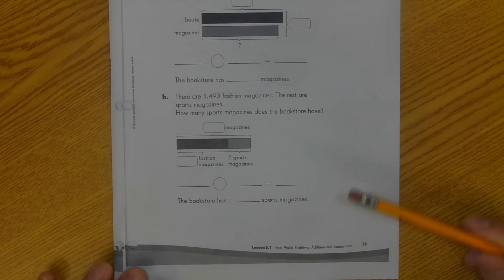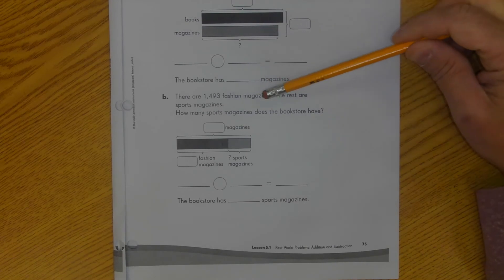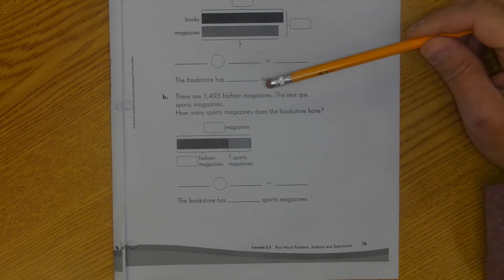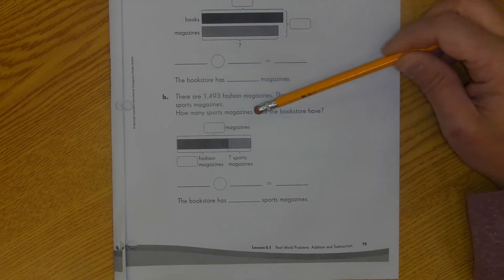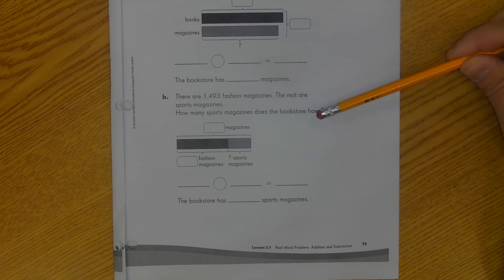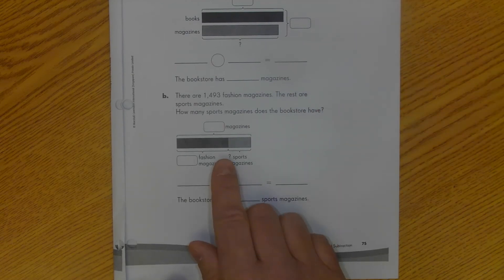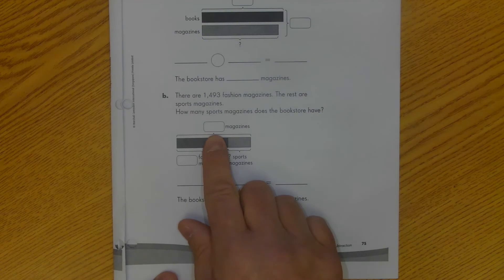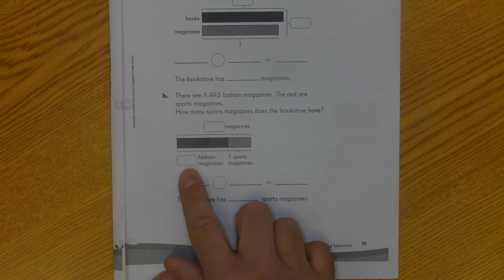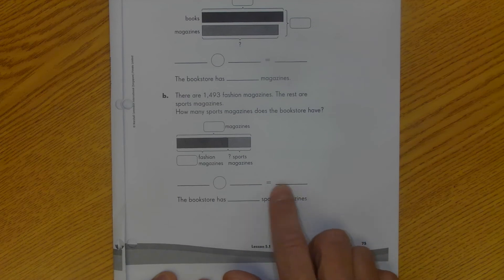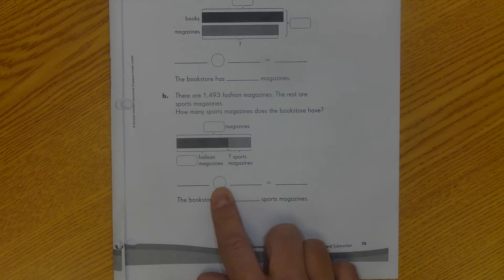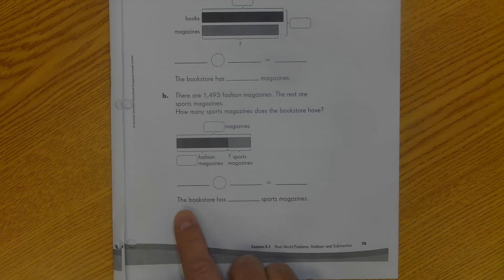These blank lines are going to be for numbers. And this circle is going to be identifying if it's addition or subtraction. So that's going to be my operation. And then remember, your answer should be written in a full sentence. So whatever number sentence you come up with here, the answer to that goes next to magazines because I'm answering in the form of a sentence. I know also that I need to go on to letter B when I'm done.